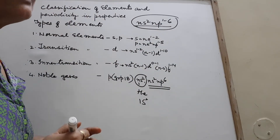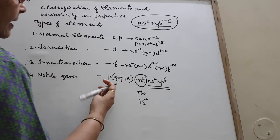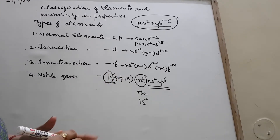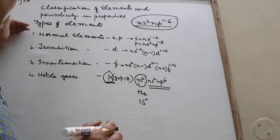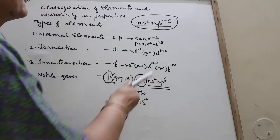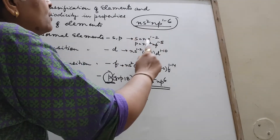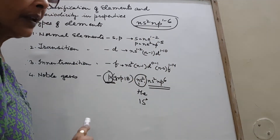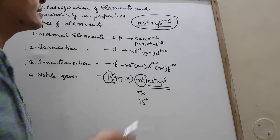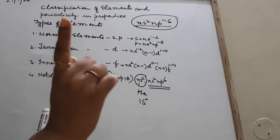P block broadly has two types of elements: normal elements and noble gases. Noble gases have configuration NS2, NP6, while normal P block elements have NS2, NP1 to 5 — their outermost shell is incomplete. So the general P block configuration NS2, NP1 to 6 covers both categories. Remember this point.